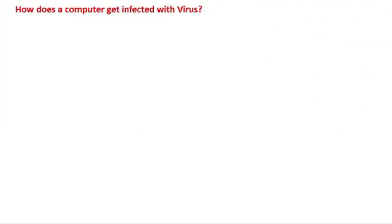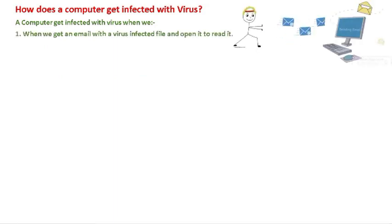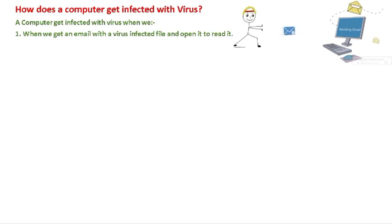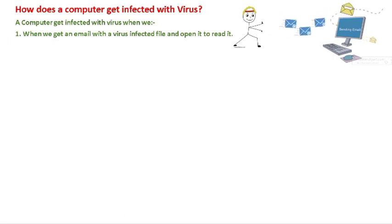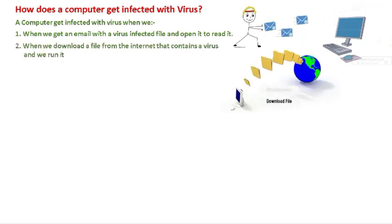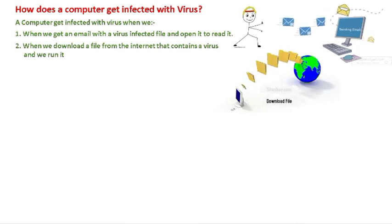How does a computer get infected with a virus? A computer gets infected when we receive an email with a virus-infected file and open it. Computer viruses are created by programmers. For example, if someone sends you an email or a file and you download or open it, you automatically give the virus a way to enter your computer system.